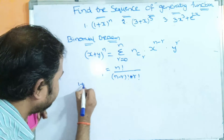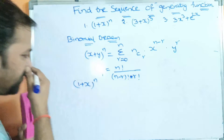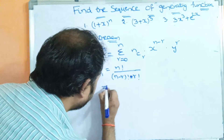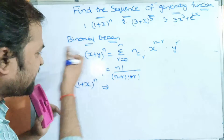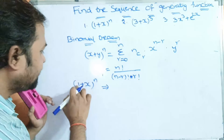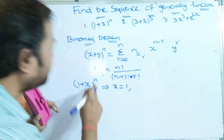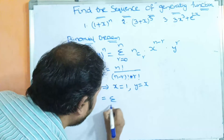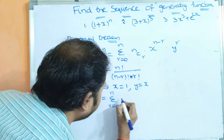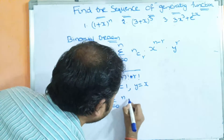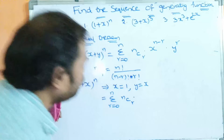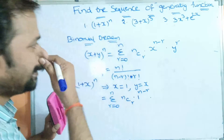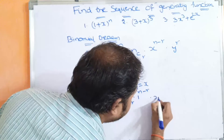Now let us solve the first problem. The generating function is (1+x)^n. This is in the form of (x+y)^n. Comparing (1+x)^n with (x+y)^n, the x value is 1 and the y value is x. So substituting into the formula: sigma r=0 to n of nCr · 1^(n−r) · x^r.